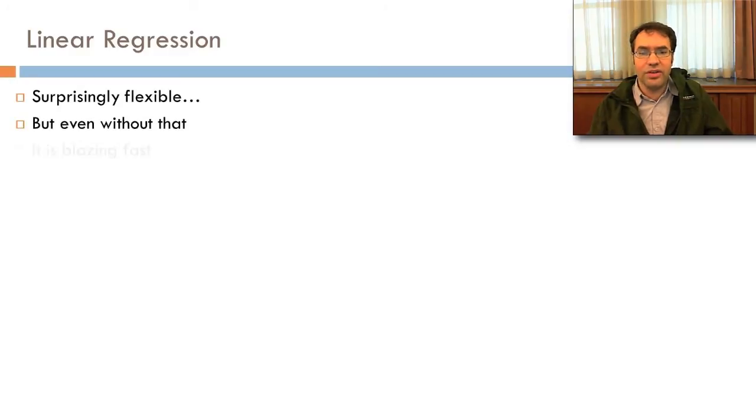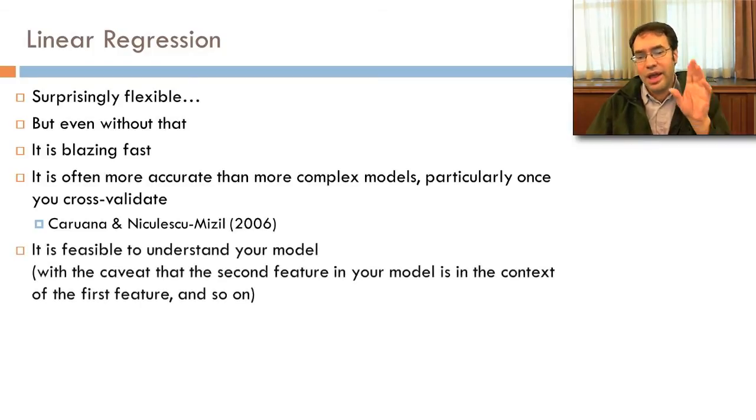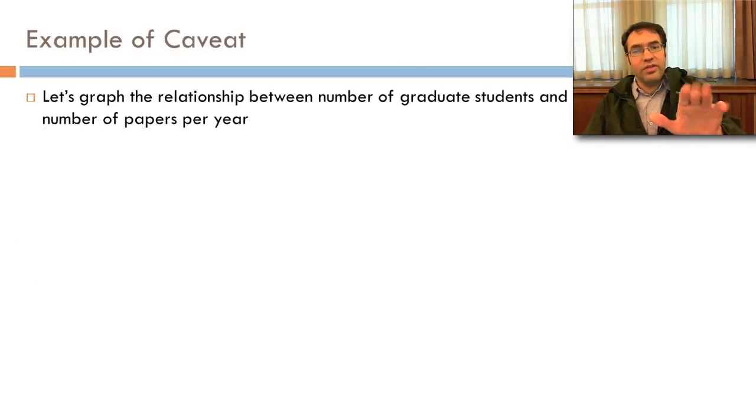But even without that, it's also blazing fast, which is good if you get a lot of data. And it's often more accurate than more complex models, particularly once you cross validate. We'll talk about cross validation later in the class. And it's feasible to understand your model with a gigantic honking caveat, which is that the second feature in your model is in the context of your first feature and so on.